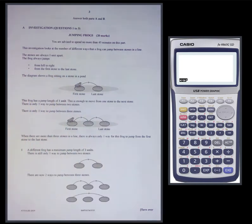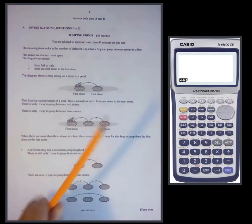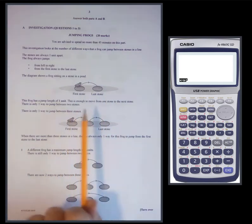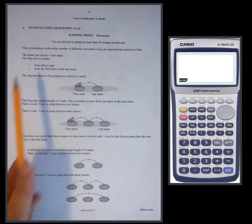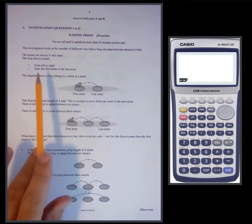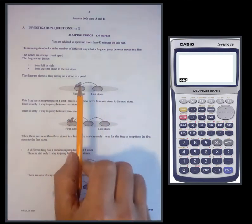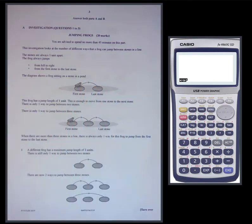This investigation looks at the number of different ways that a frog can jump between stones in a line. The stones are always one unit apart. The frog always jumps from left to right, and it always jumps from the first stone to the last stone — it starts on the stone furthest to the left and ends up on the right.